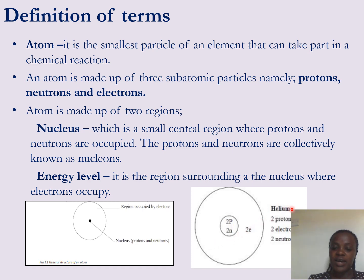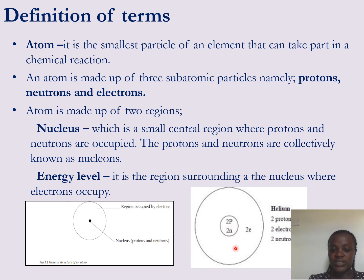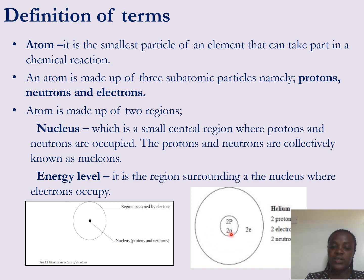For example, an atom like helium — this is the structure of helium. Inside the nucleus, this small central region, we find the protons and neutrons. Helium has two protons and two neutrons inside the nucleus. The surrounding region is where we find the two electrons of helium. So helium has two protons, two neutrons, and two electrons — protons and neutrons inside the nucleus, and the two electrons in the energy levels.